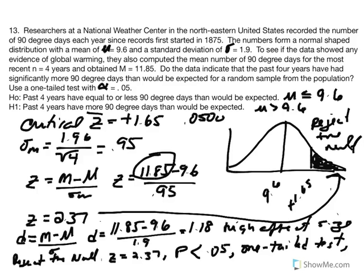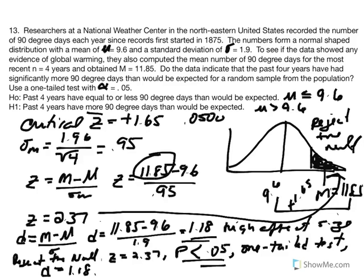The d value of 1.18 tells us that the difference from the population mean of 9.6 to the sample mean of 11.85 equals 1.18 standard deviation units — showing a great mean difference or great effect size. That's it for this problem.